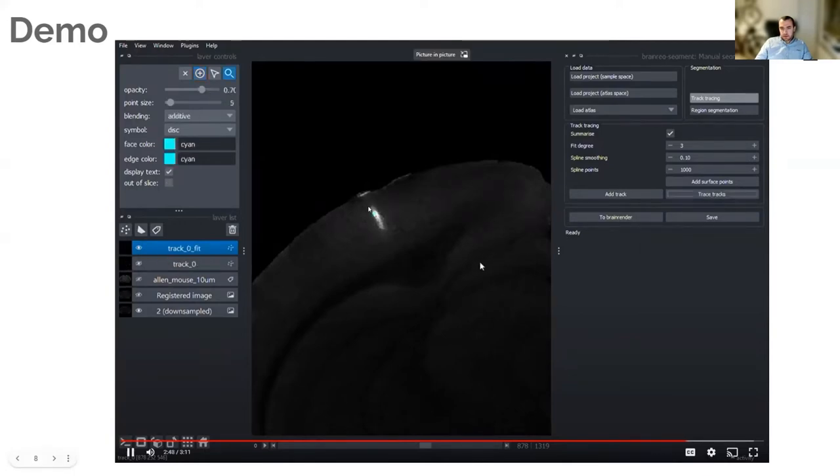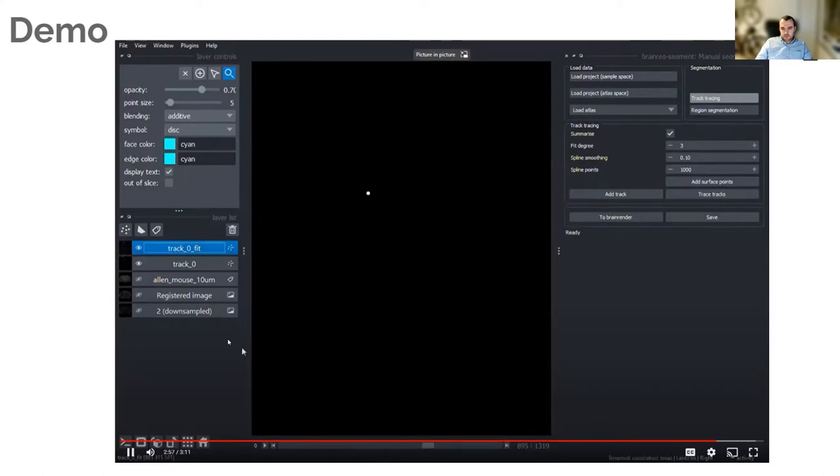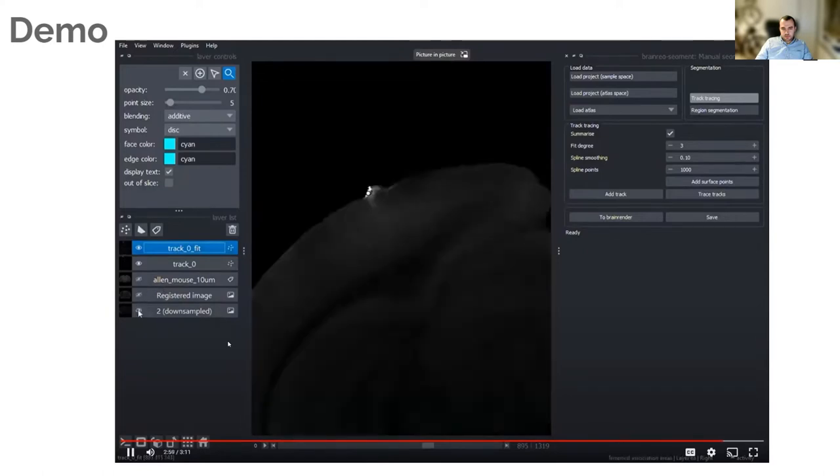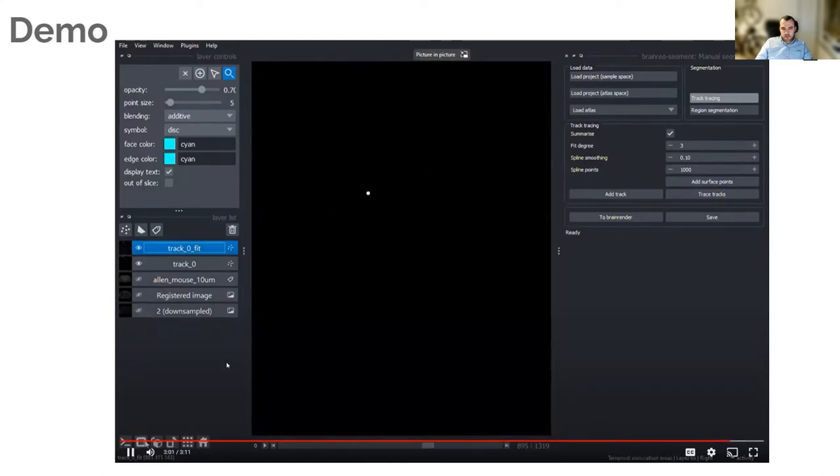You click trace tracks. It joins them up and makes this blue line that's kind of hard to see. But if we turn the raw data off and just look at it in 3D, which I think is coming next in the video, you can see that it is a line along the track. It's a slightly curved line.